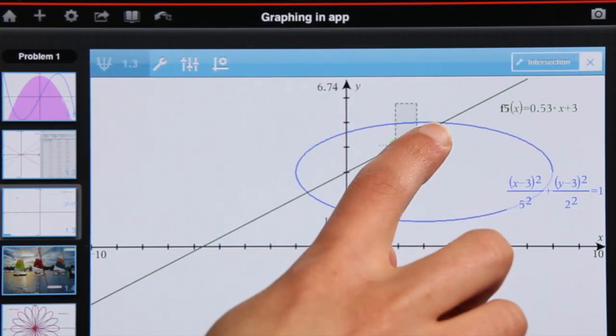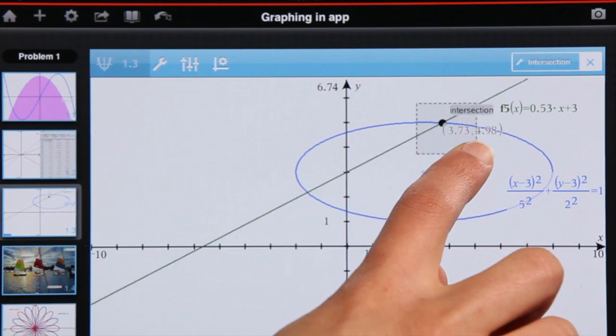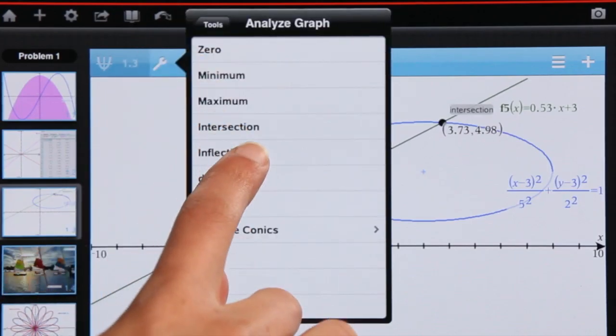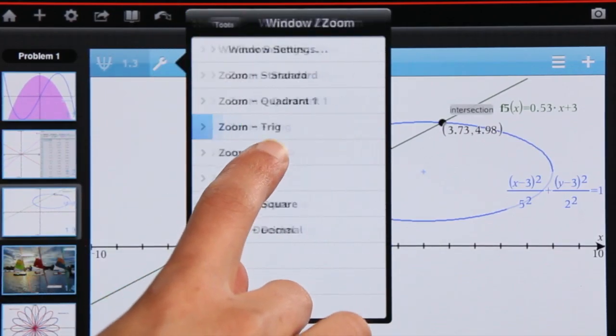Quickly find points of intersection and modify the graph to see how it changes. And even change your window settings to suit your preference.